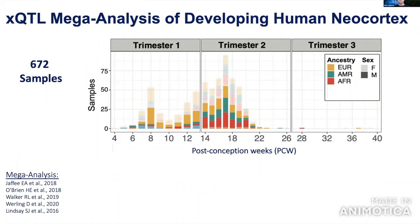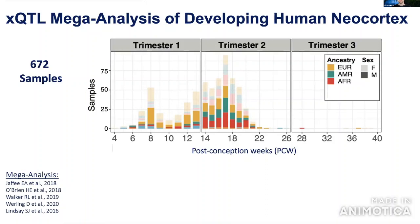At the 10,000-foot view, we performed a large-scale mega-analysis of five studies profiling the developing human neocortex, compiling and uniformly processing SNP genotype and RNA sequencing data from 672 unique samples. This spans largely the first and second trimesters of gestation, between 4 and 22 weeks gestational age, though we do have samples across all three trimesters.